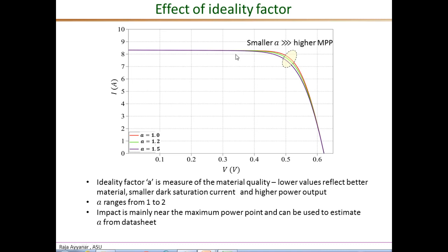From this plot, which is the IV curve for a single PV cell for three different values of the ideality factor A, clearly the red curve corresponding to the lowest value of A, A equals 1, has the highest maximum power. The impact of the ideality factor is most dominant near the maximum power point MPP. We will use that fact to make an estimate of the ideality factor A.